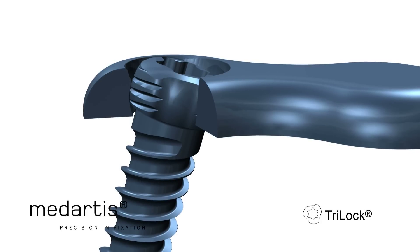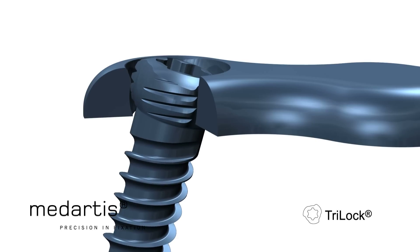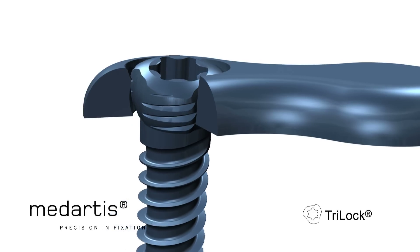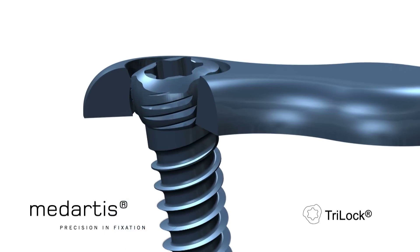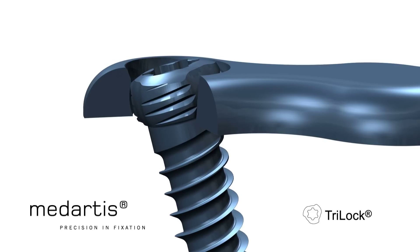The absence of a thread carries the additional advantage that the screw can be unlocked and relocked at a new angle up to three times without losing stability. This fact allows intraoperative adaptations of angles and vernier adjustment.